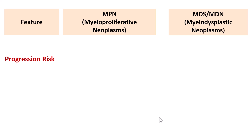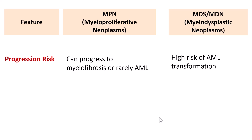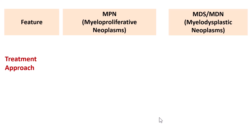Regarding progression risk, Myeloproliferative Neoplasms usually progress to myelofibrosis — the marrow becomes fibrous — and very rarely progress to acute myeloid leukemia. Whereas Myelodysplastic Syndrome carries a very high risk of transformation to acute myeloid leukemia. That is the key reason it is important to know whether you are dealing with MDS or MPN.